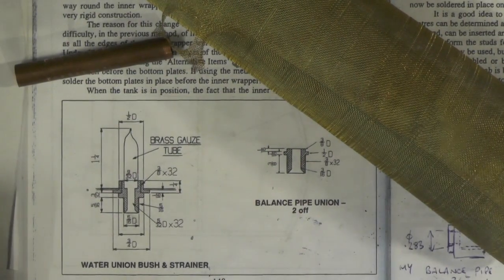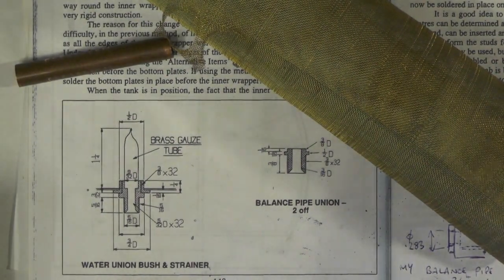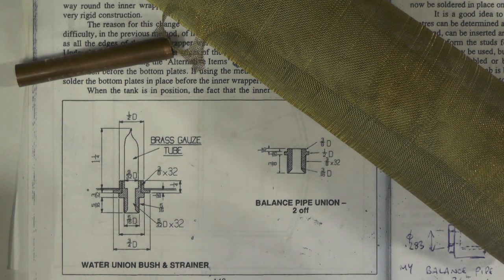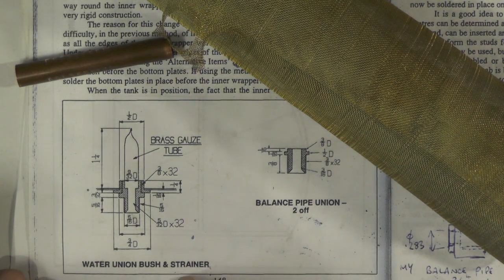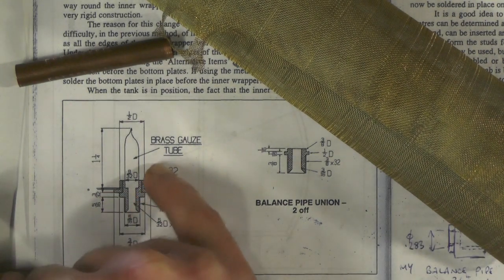Hey up everybody, today then I'm continuing with my tanks and the pipework and all the associated things to do with pipework. We'll have a look at these strainers today. The actual bush is soldered into the tank, then you've got a union that fits into that bush for your pipe.